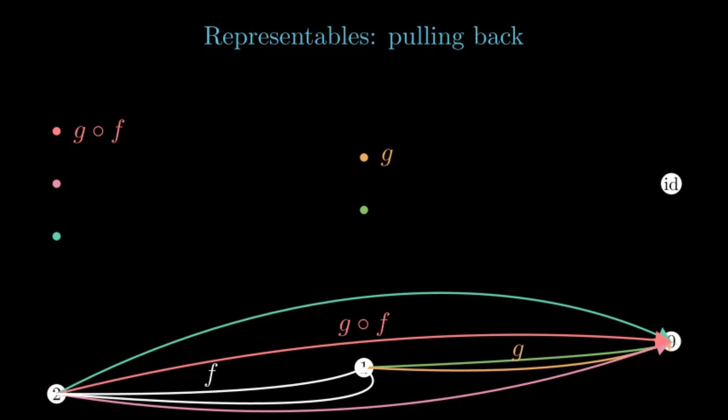One thing to note now is that this pullback rule implies that our representable is in a sense freely generated by the identity on 0. The identity on 0 can be pulled back into any element of the pre-sheaf. Is there a concise way to express this observation?